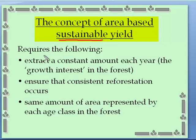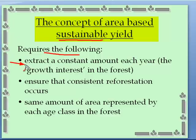To do this, we need an approach that deals with sustainability. We use this concept of area. The whole idea is you extract a constant amount each year from the forest — like living off the interest from your $100 million. It is the growth in the forest we're going to live off.